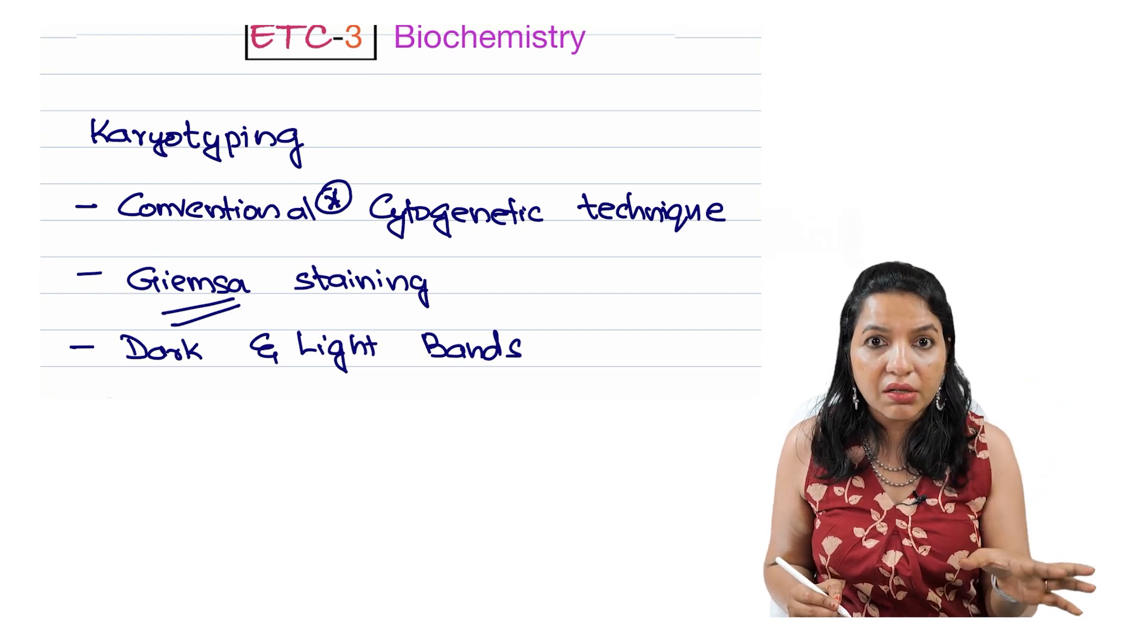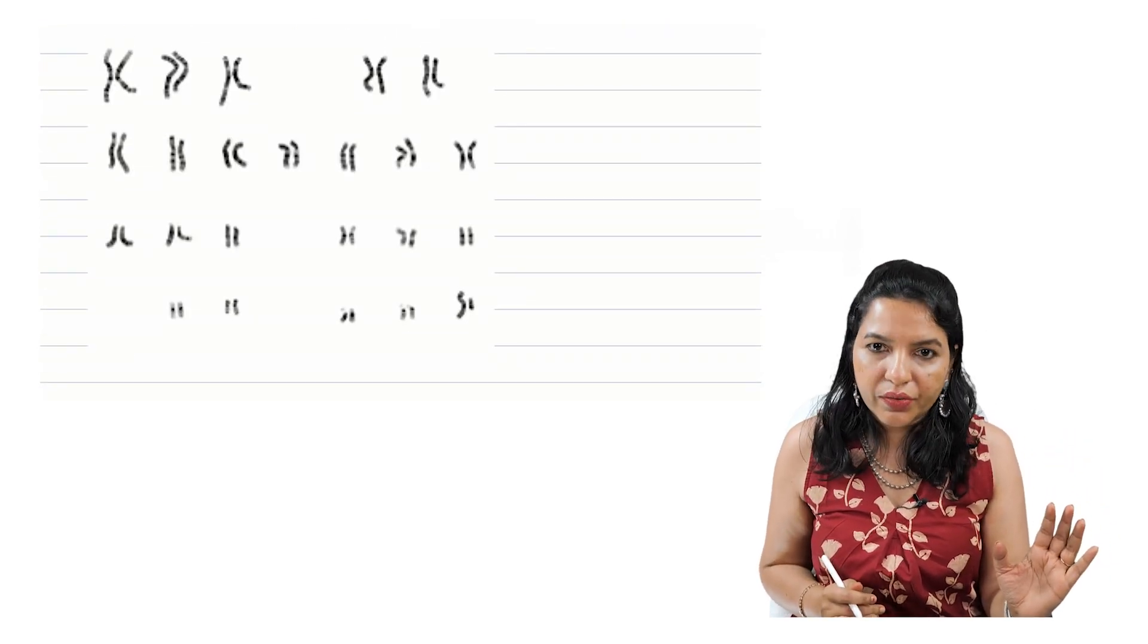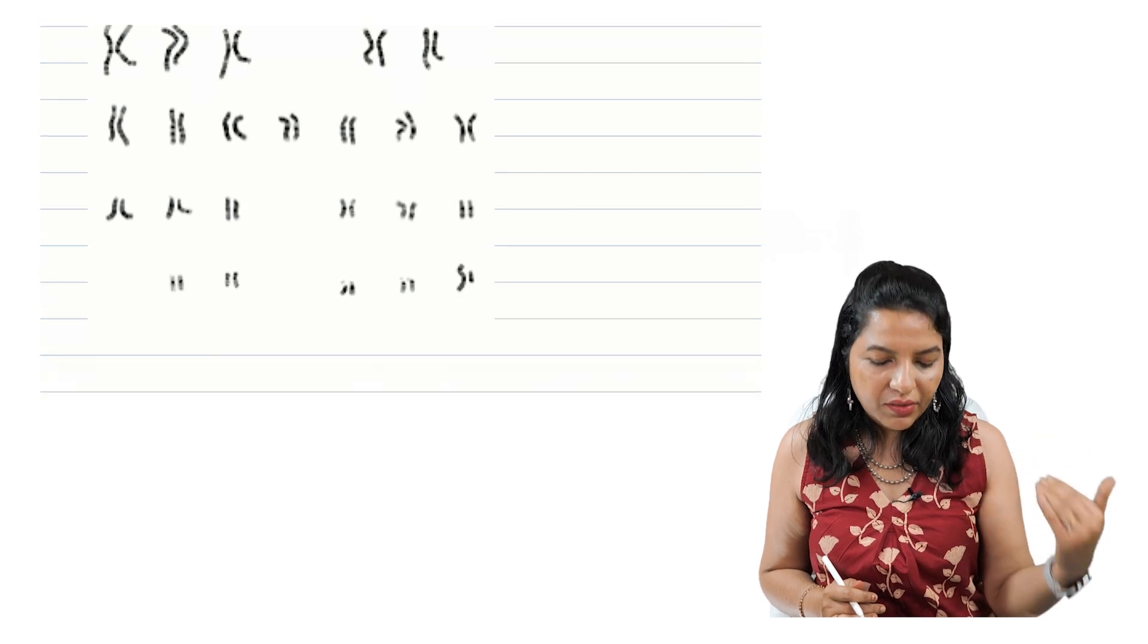It is always, remember, they are reproducible dark and light bands. So this is the image of a conventional karyotyping where you can see dark and white bands.